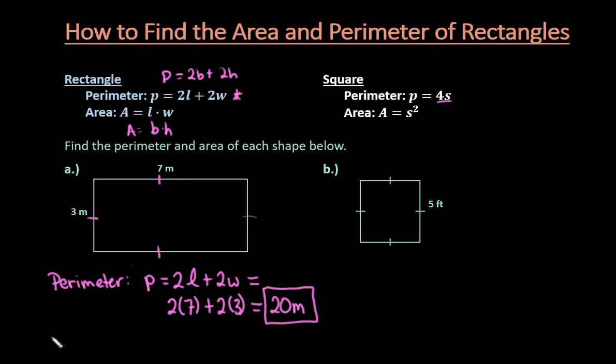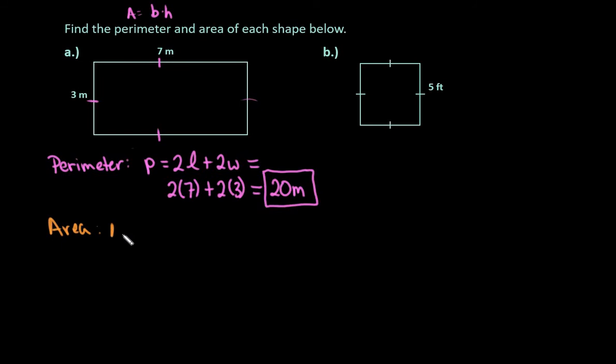To find the area, the area is just the length times the width. And again, it doesn't matter which one you pick to be the length and which one you pick to be the width, because multiplication is commutative. So it doesn't matter if I do seven times three or three times seven, I'm going to get the same answer. I'll just stay consistent with what I used up here, because I just used my length to be seven and my width to be three. So seven times three would give me 21. And remember, with area, the units are going to be squared. So I would have meters squared. Very simple process.